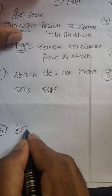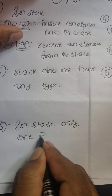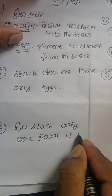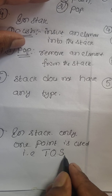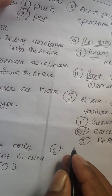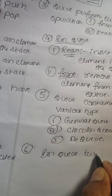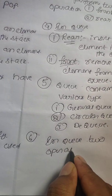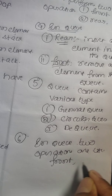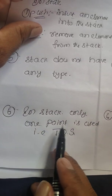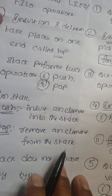In stack, only one point is used — that is the top of the stack, meaning TOS. Whereas in queue, two points are used — front and rear. So in stack there is only one point whereas in queue there are two points.